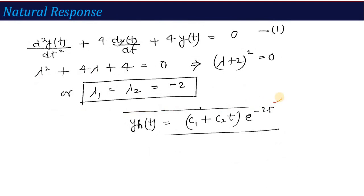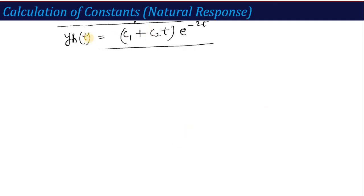So first we write the homogeneous solution: y_h(t) = (C₁ + C₂t)·e^(−2t). To find the natural response from this homogeneous solution, we calculate two equations by substituting t = 0. Putting t = 0, we get y(0) = C₁, since the C₂t term vanishes and e^(−2·0) = 1.